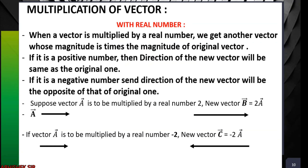Multiplication of a vector is also simple using mathematical concepts. When a vector is multiplied by a real number, we get another vector whose magnitude is that number times the magnitude of the original vector. The real number might be 2, 3, or even a negative number.